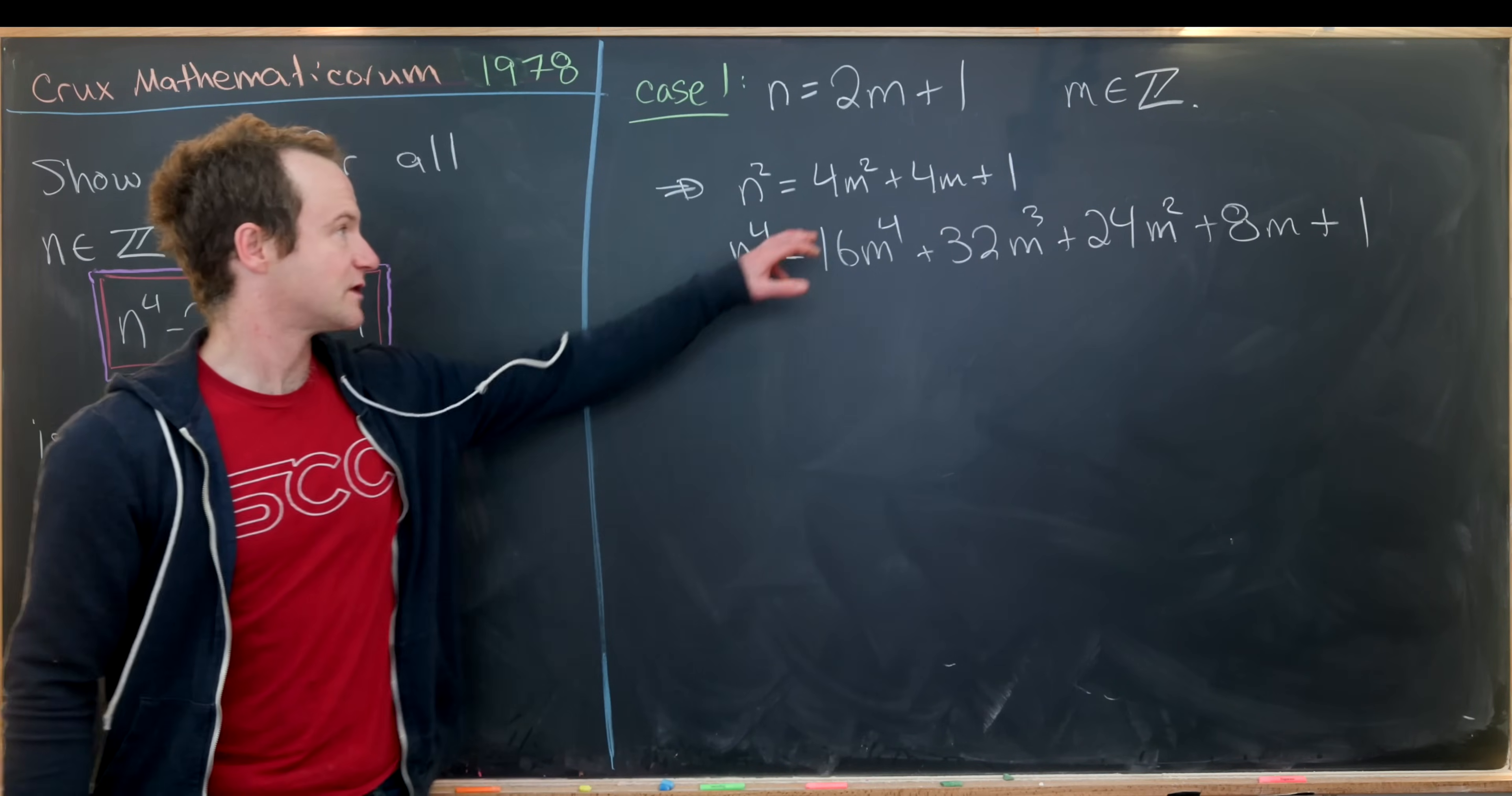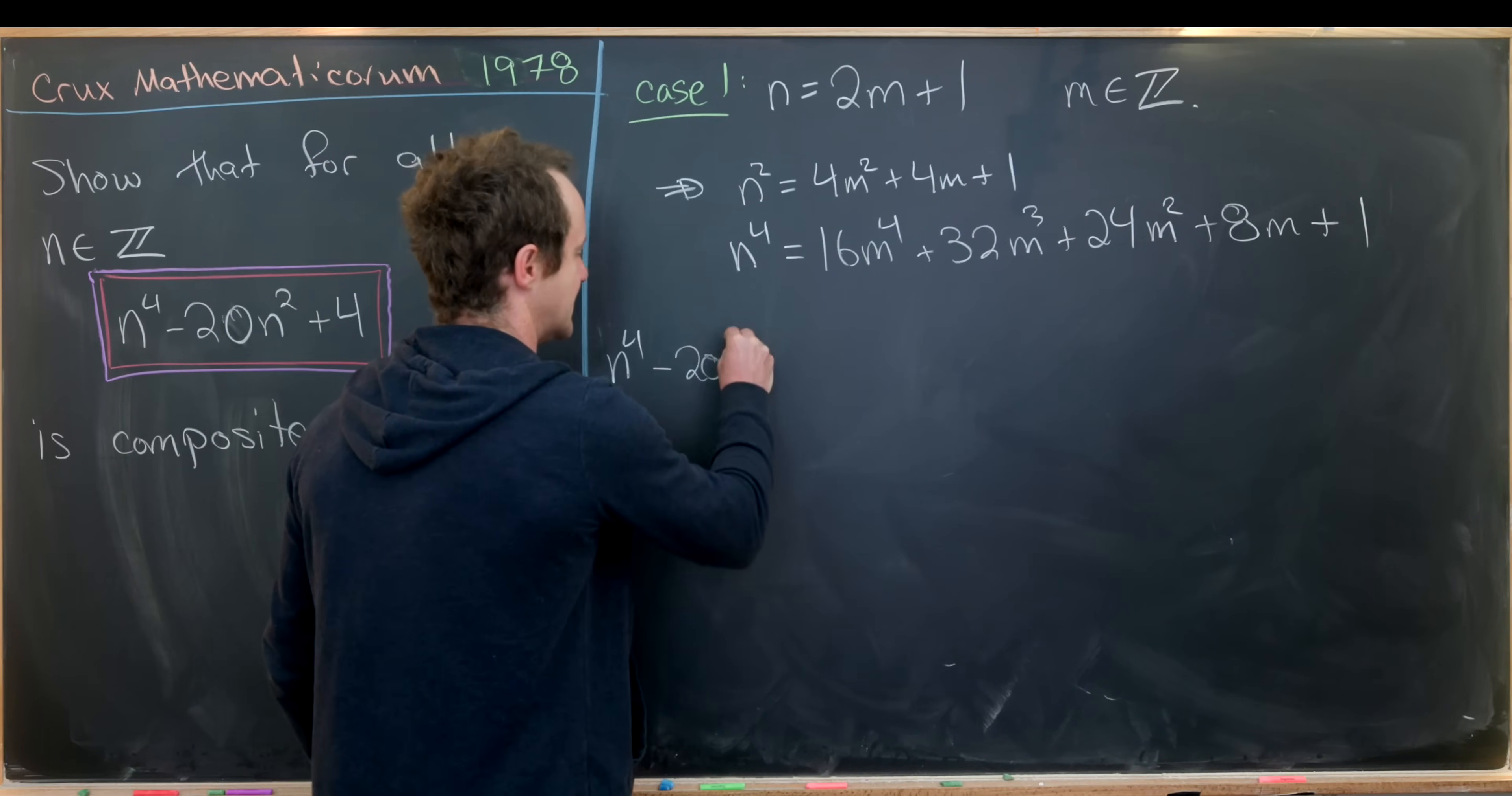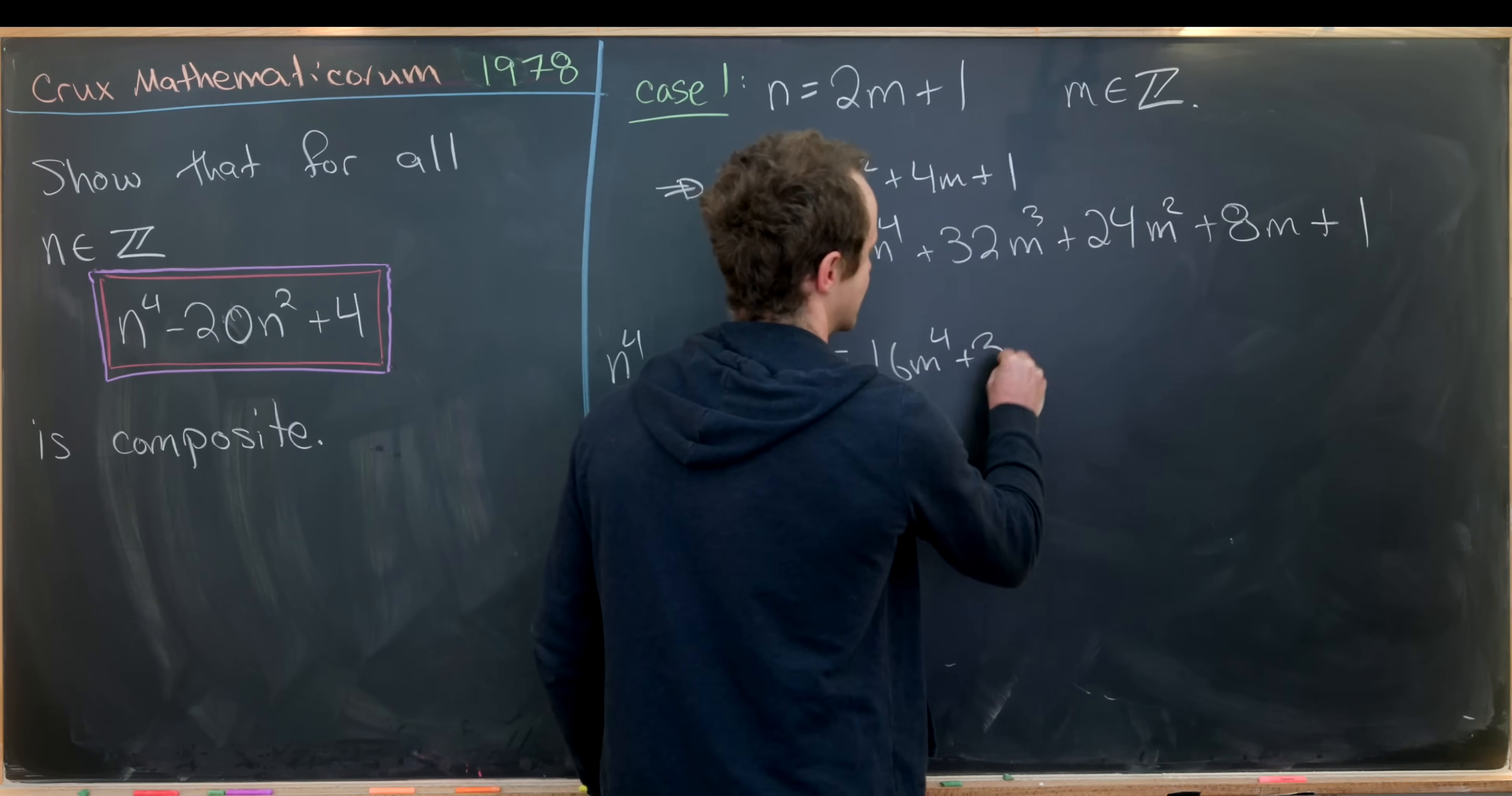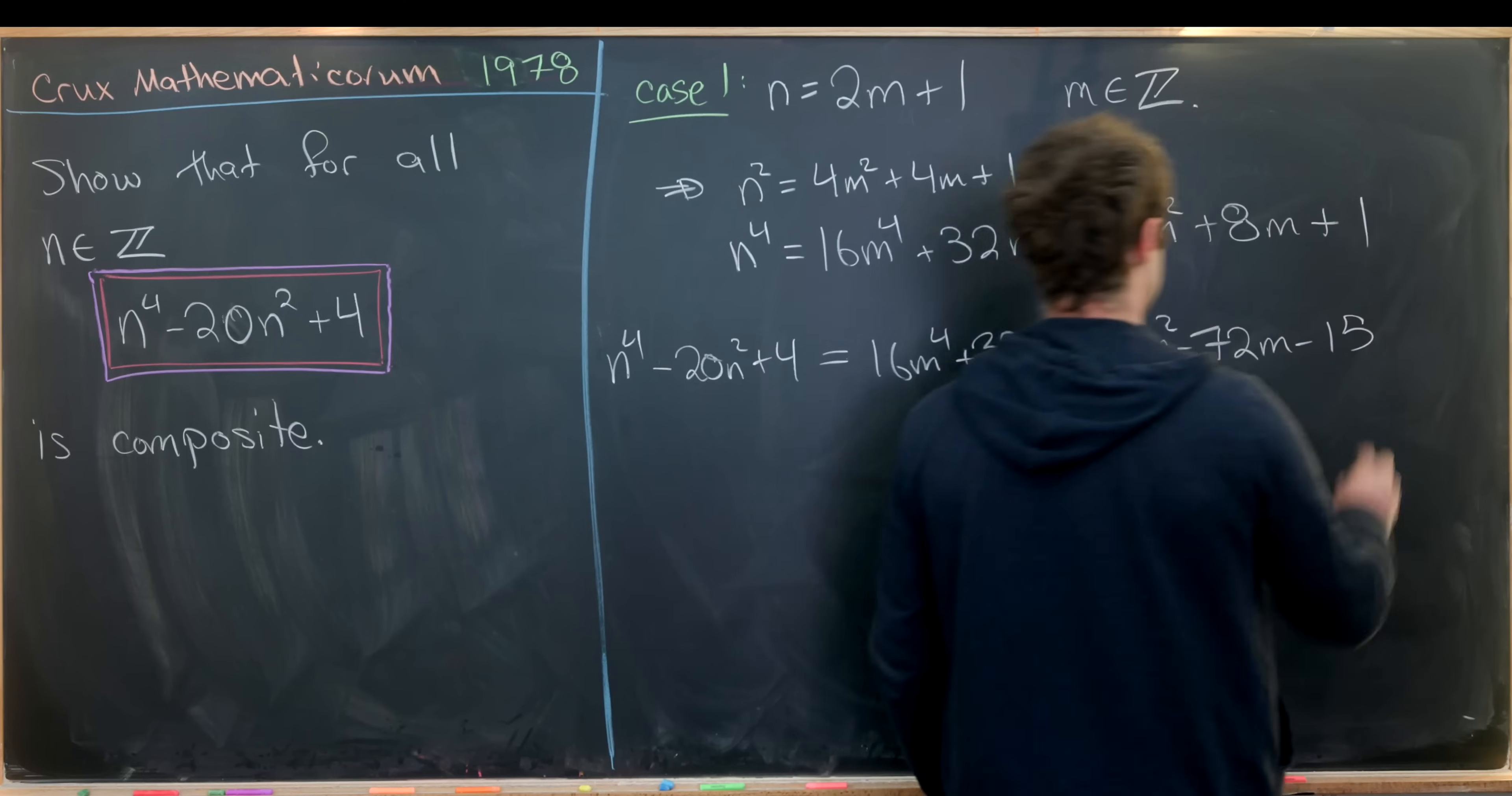And then we can calculate n to the fourth as 16m to the fourth plus 32m cubed plus 24m squared plus 8m plus 1. That's just from multiplying n squared times n squared and collecting all the terms. It's a bit of a pain, but it's doable.